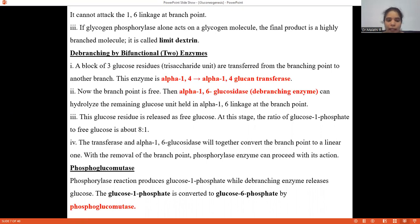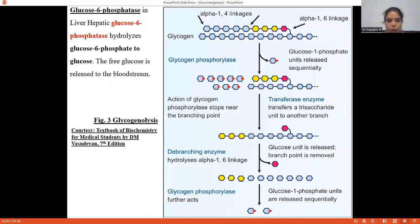Phosphoglucomutase: Phosphorylase reaction produces glucose-1-phosphate which cannot be utilized as such by tissues. The glucose-1-phosphate is converted to glucose-6-phosphate by the enzyme phosphoglucomutase.